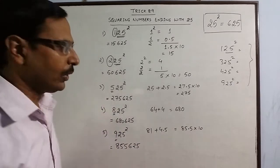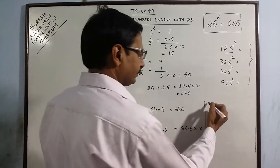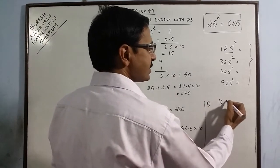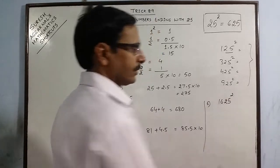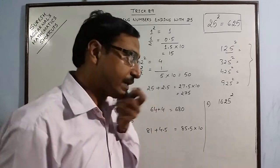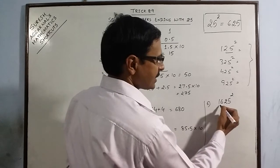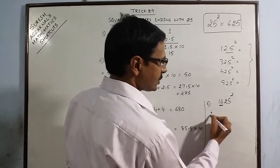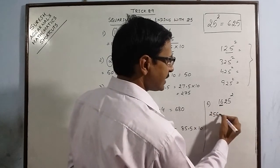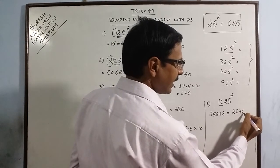See, likewise you can go on and on. Let us take a very large number now. Say we have 1625 square. Now it is a very big number. If you calculate the square of this by traditional method, you will consume say 30 seconds to solve this. But through this, 16, 16 square is 256, half of 16 is 8. So 264 multiplied by 10.